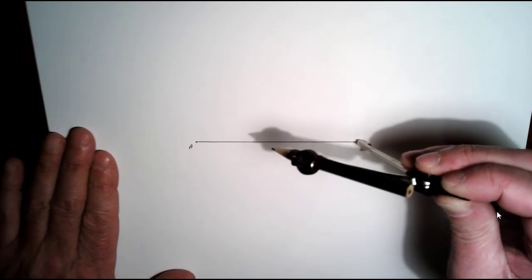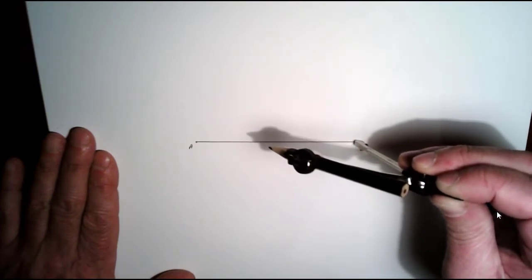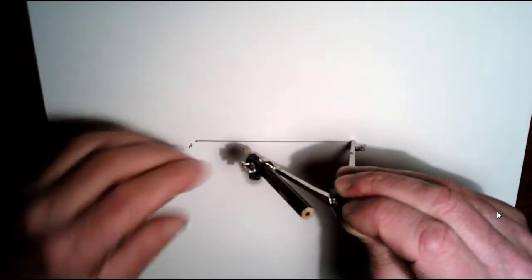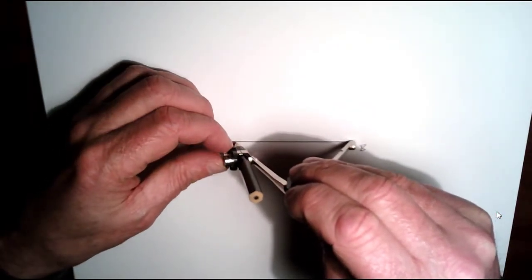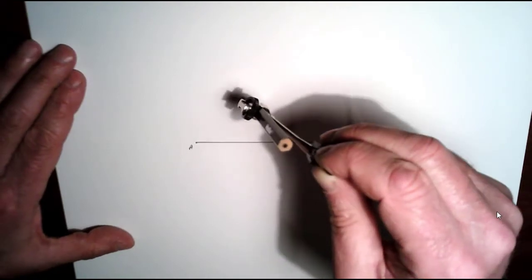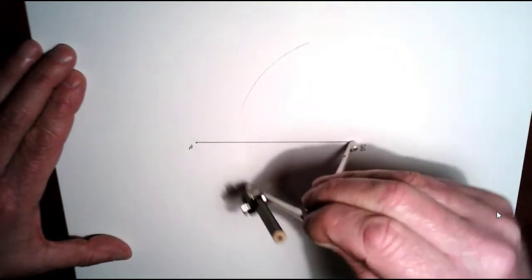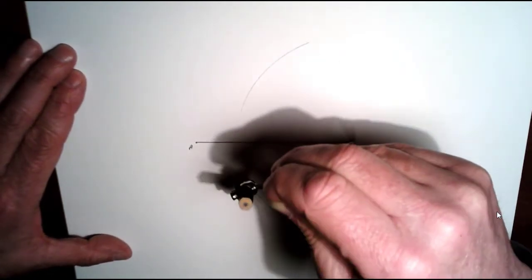Put it at B and bring the pencil just more than halfway out. If you don't bring it more than halfway out the arcs won't meet. So I'm just going to draw an arc up here, I'm going to draw an arc down here.